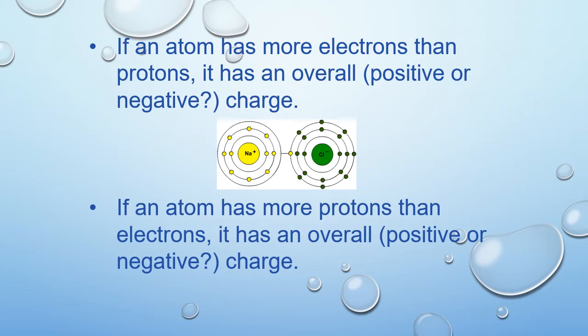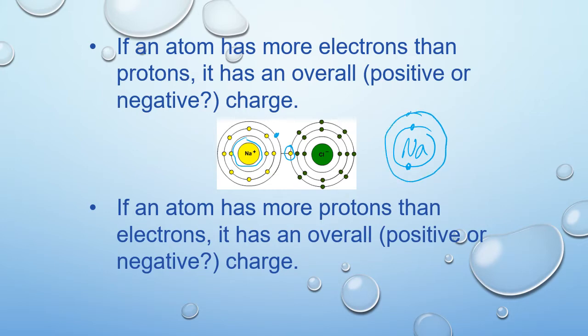An individual atom can be either positive or negative, especially when we start to combine them together. When we look at sodium and chloride ions and examine the electron shells, the first shell of sodium is completely full — two electrons — then the second shell has all eight filled. Then there's a third shell with one additional unpaired electron sitting out there by itself.